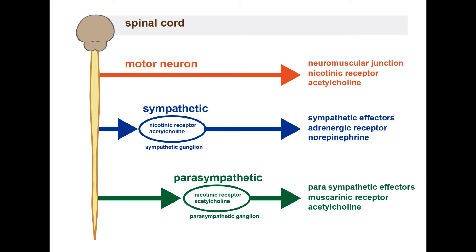In the parasympathetic system, the post-ganglionic neuron is short, whereas in the sympathetic system the post-ganglionic neuron is very long and unmyelinated, making conduction slow. The key difference in the parasympathetic system is that the post-ganglionic neuron releases acetylcholine rather than norepinephrine, and the effector organ has a muscarinic receptor.